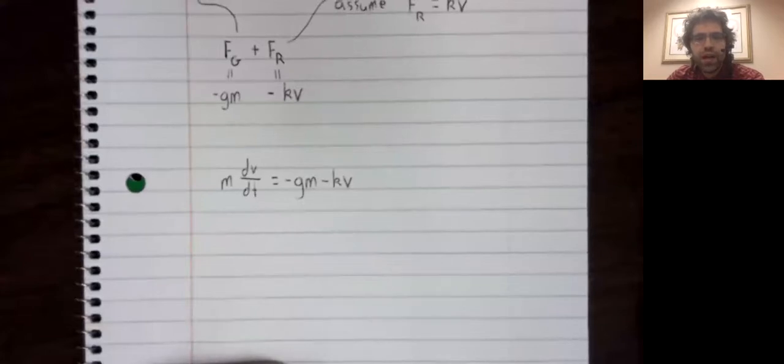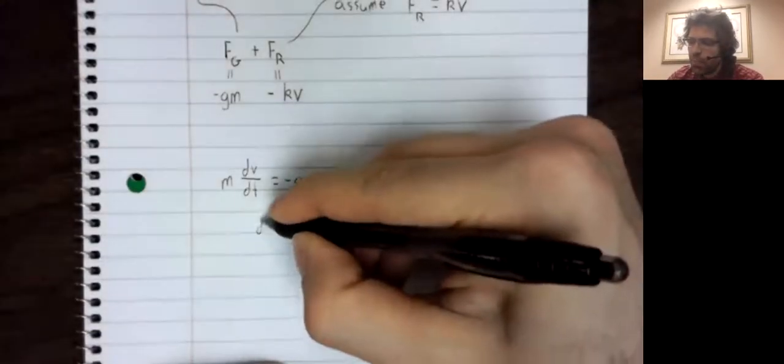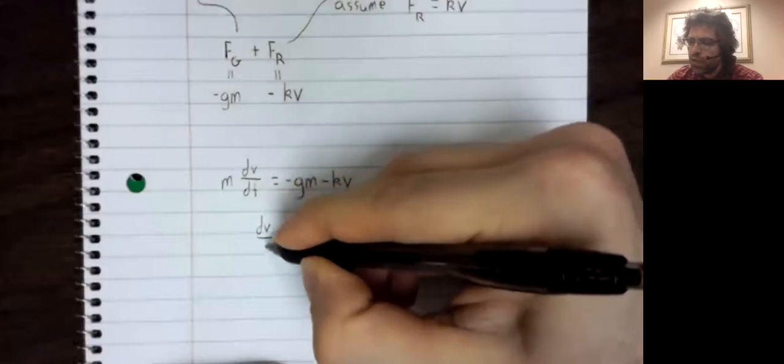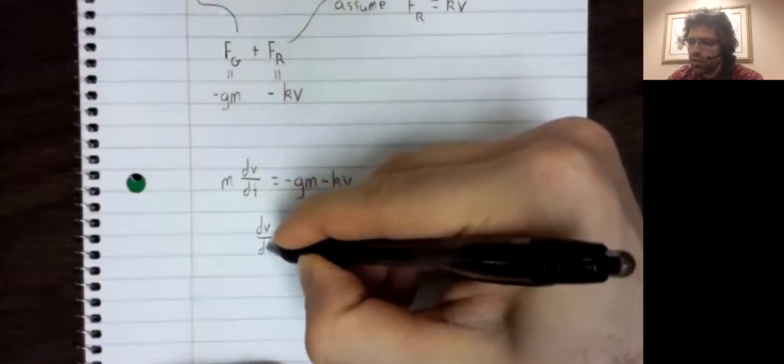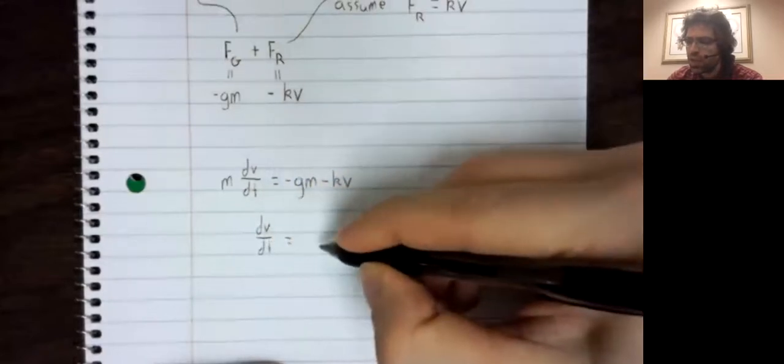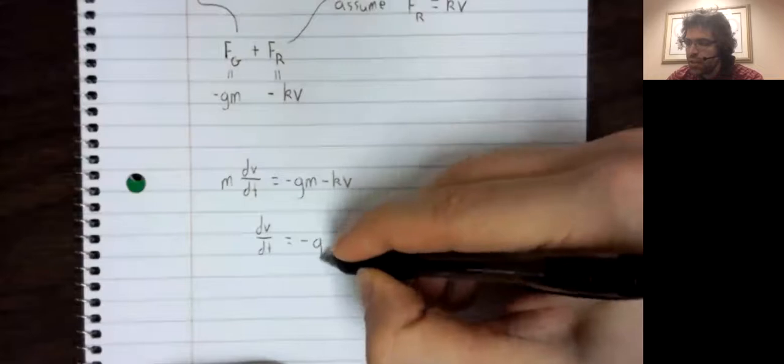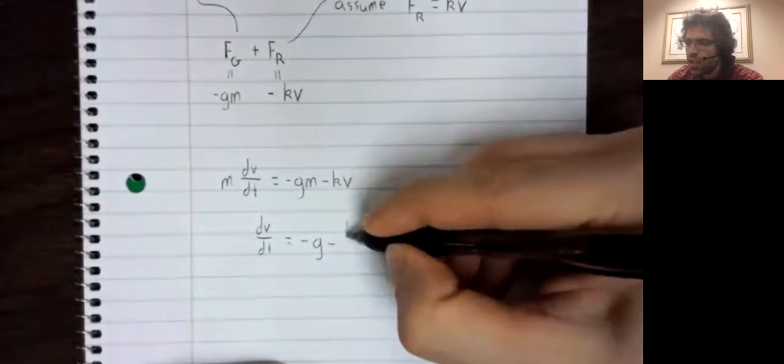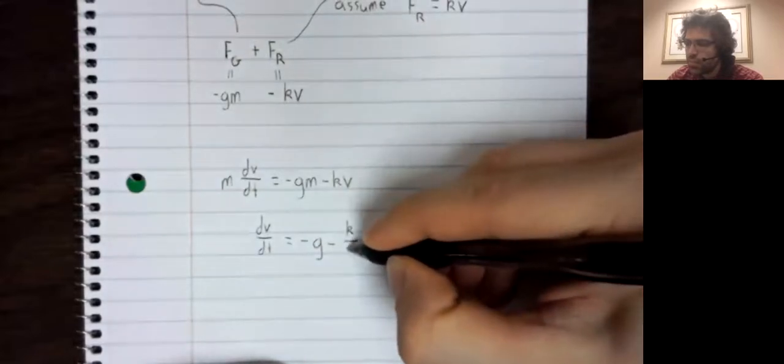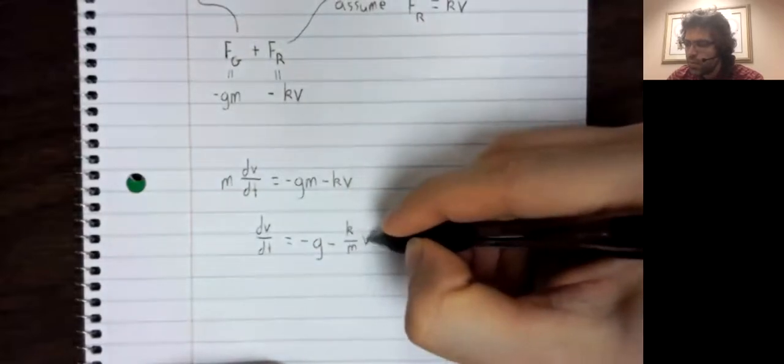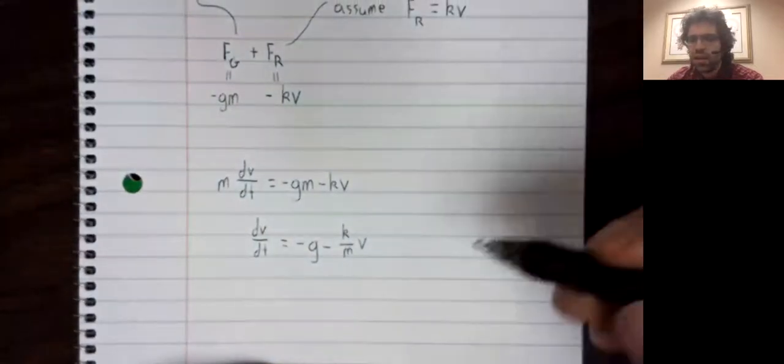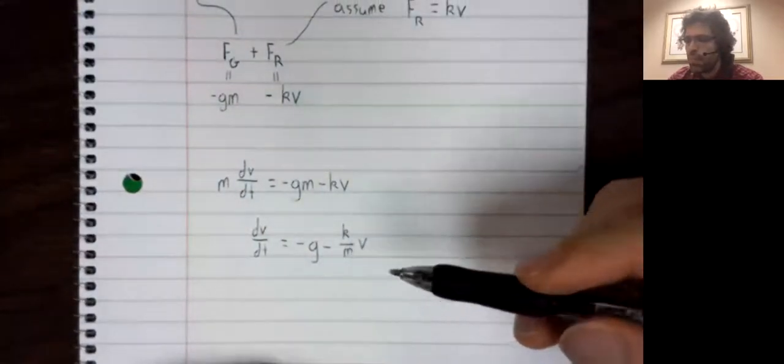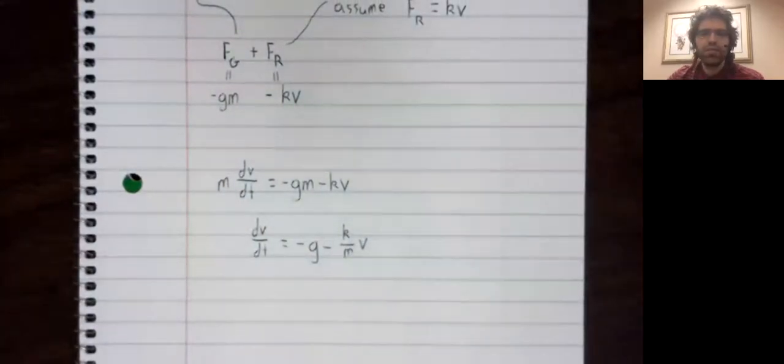Divide both sides by M and the derivative of the velocity with respect to time is negative g minus K over M times V.